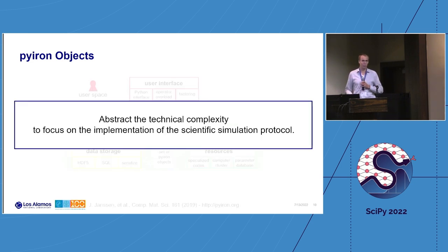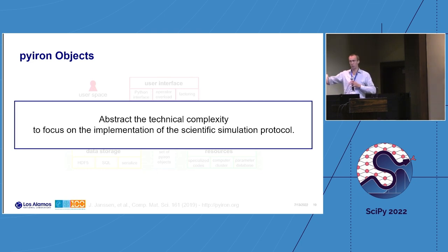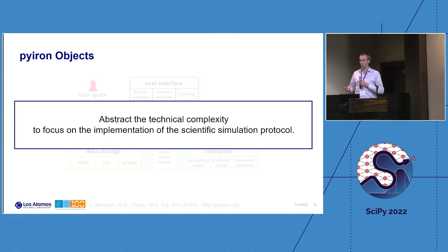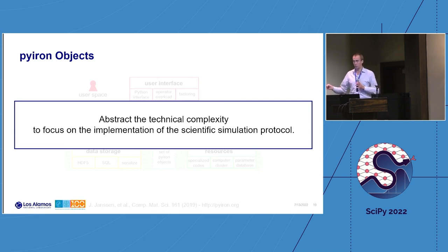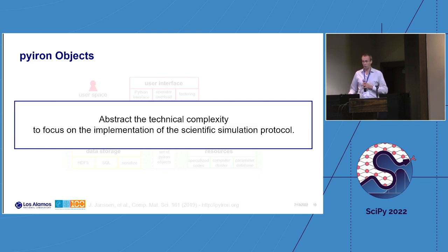This is also helpful for debugging: if a calculation fails on a compute node, it's basically frozen in the HDF5 file; you reload it and get exactly the state it had before. With this, we try to abstract the technical complexity from the scientific complexity. As scientists, there's enough struggle with the scientific part — we don't want to worry about submitting to a cluster, data formats, or parsers.